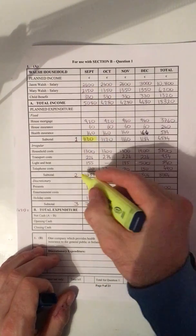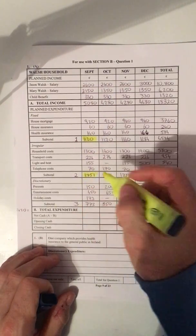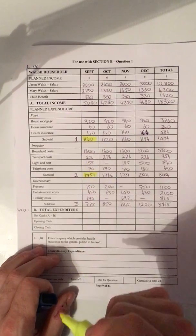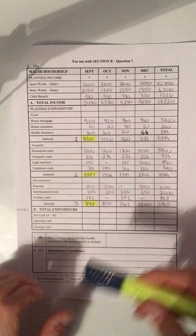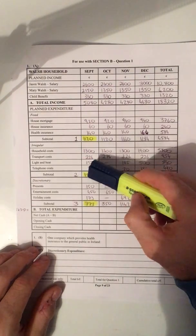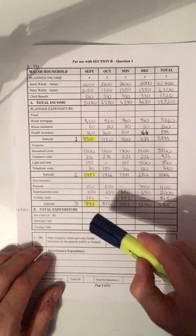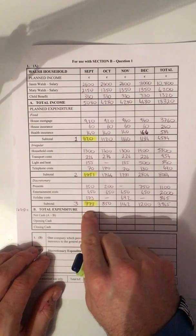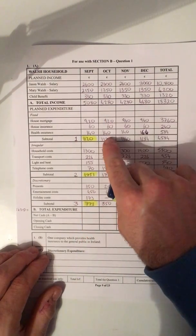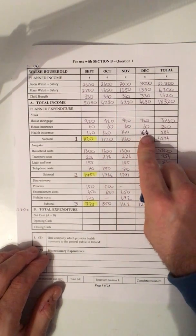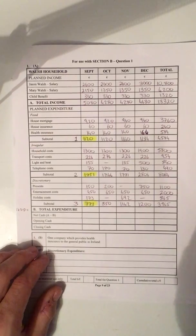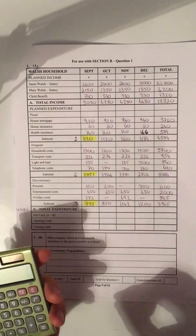The three figures you need are the subtotal for September for fixed expenditure, the subtotal for September for irregular expenditure, and the subtotal for September for discretionary expenditure. You're adding fixed, irregular, and discretionary together to get your total expenditure figure. Then you complete the exact same process for October, November, December, and your total column.